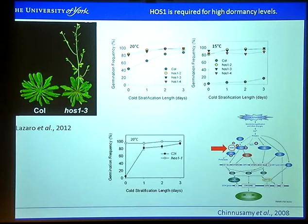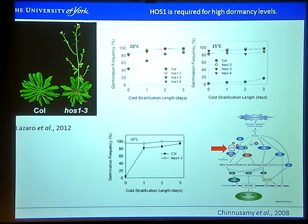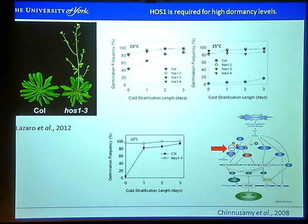When we matured HOS1 mutants in the Columbia background at 20 and 15 degrees, in both cases the seeds are completely non-dormant — you cannot induce high levels of dormancy by moving to low temperature. We then looked in the HOS1-1 mutant, which is in the C24 background. At warm temperatures, C24 is actually highly dormant, requiring cold stratification to break the dormancy. But again, the HOS1 mutant is completely non-dormant, suggesting that HOS1 is part of a more general mechanism regulating dormancy that is not temperature-specific.